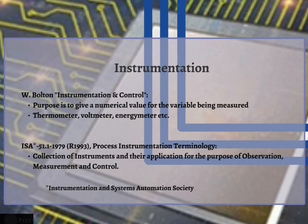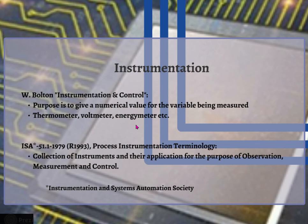Coming back to the main topic: W. Bolton, the author of the book 'Instrumentation and Control Systems,' defines instrumentation as follows — the purpose of an instrumentation system used for making measurements is to give a numerical value for the variable being measured. For example, a thermometer gives a numerical value for temperature, a voltmeter gives a numerical value for voltage, and an energy meter gives numerical values of energy in kilowatt-hours.